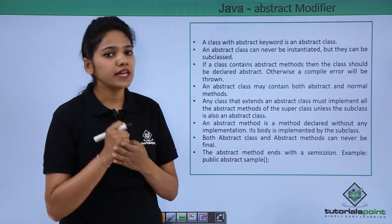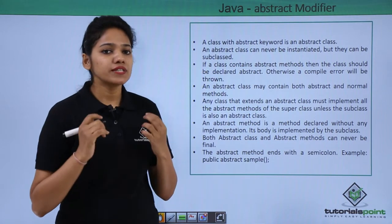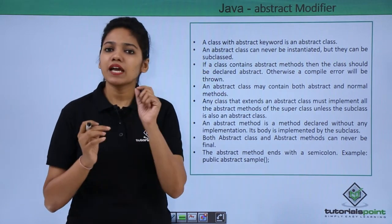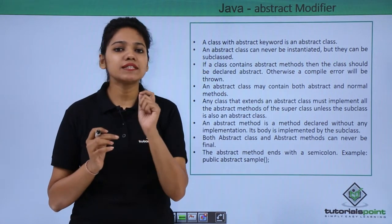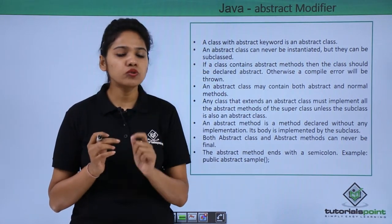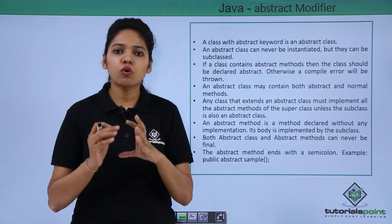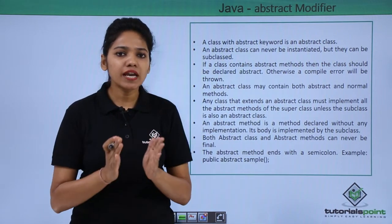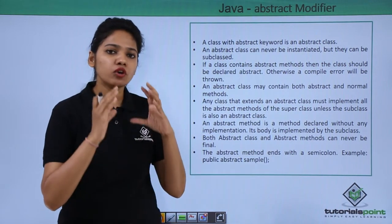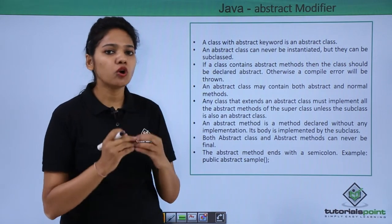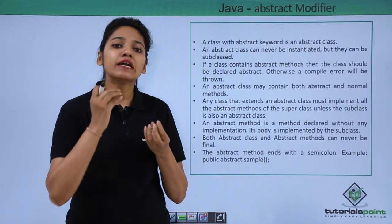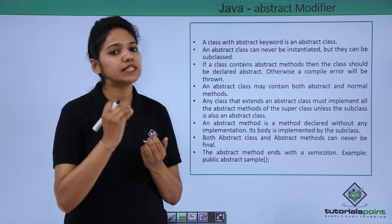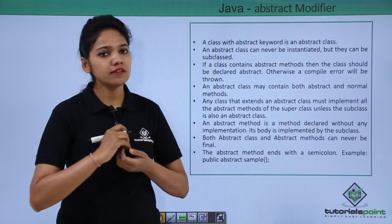To summarize, the abstract keyword is mainly used when you just want to provide the outline of your picture — when you do not want to define exactly what a class will do.